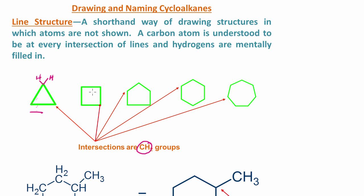This here is cyclobutane. It has one, two, three, four carbon atoms. Cyclopentane has one, two, three, four, five carbon atoms.